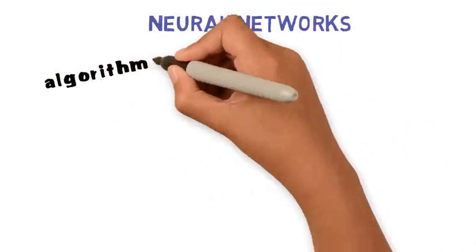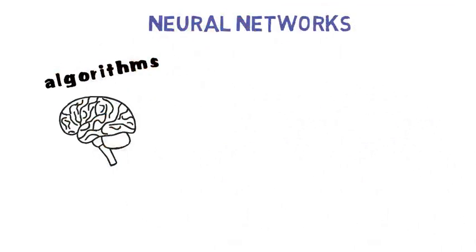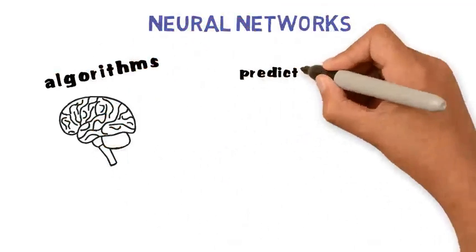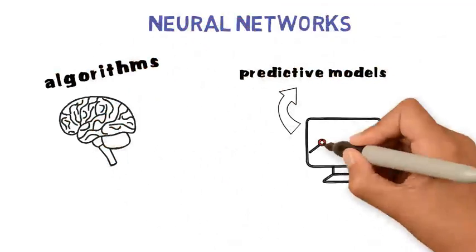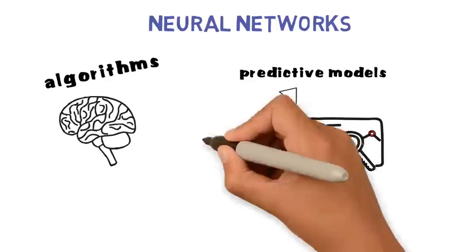Neural networks are algorithms that are based on the way the brain works. They can build predictive models by learning the patterns in historical data.